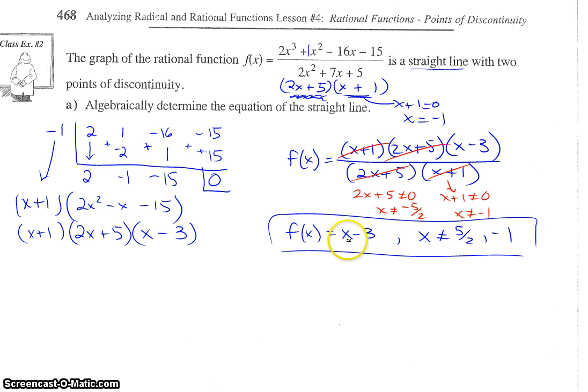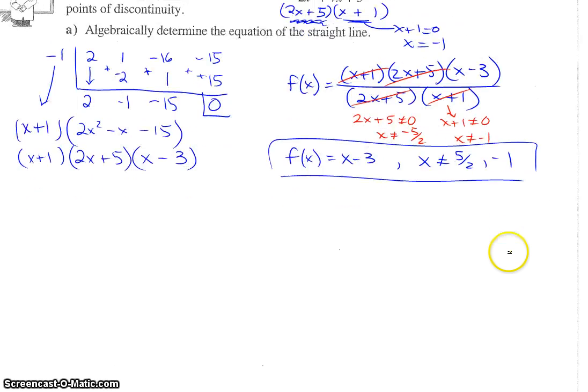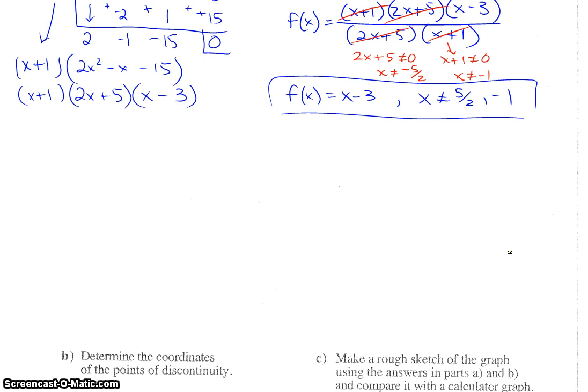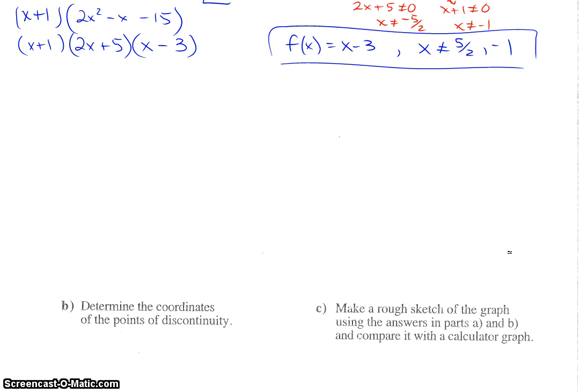So, it should look like a linear function, the same as x minus 3, except with holes in the graph at 5 over 2 and negative 1. Okay, so determine the coordinates of the points of discontinuity. Well, we know, here's our simplified function, f(x) equals x minus 3, where x cannot equal 5 over 2 and negative 1.